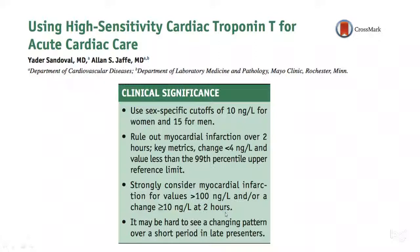We should avoid doing repeat troponins every six hours. ICU nurses are the ones who can really play a major role in preventing this. It is important to make sure we are doing serial troponins every hour, not every six hours.